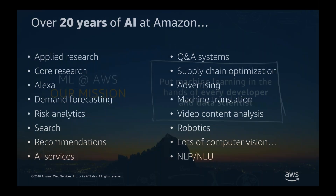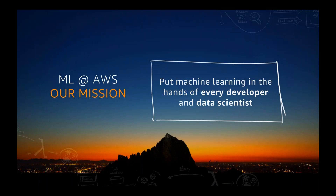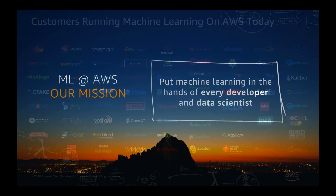That leads us to a discussion about AWS and ML — what our mission is. It's really all about democratizing AI and ML. We want to put machine learning in the hands of every developer and data scientist. Everything we talk about today is really focused towards enabling even developers to take advantage of machine learning.